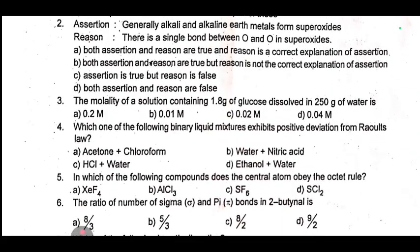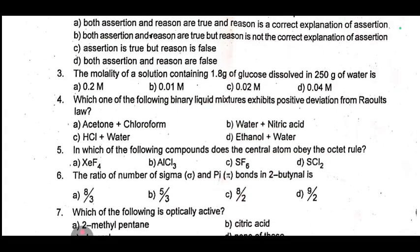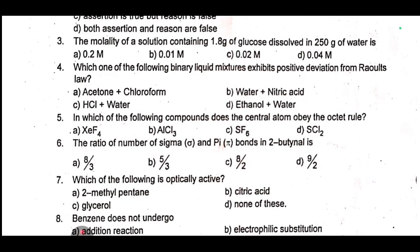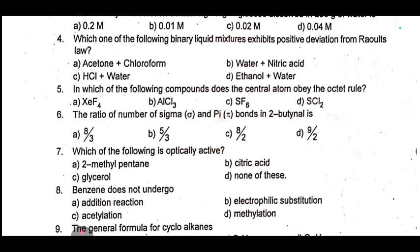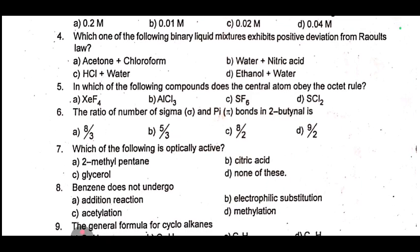Fourth one: which one of the following binary liquid mixtures exhibits positive deviation from Raoult's law? Fifth one: in which of the following compounds does the central atom obey the octet rule? Sixth one: the ratio of number of sigma and pi bonds in 2-butanil is dash.